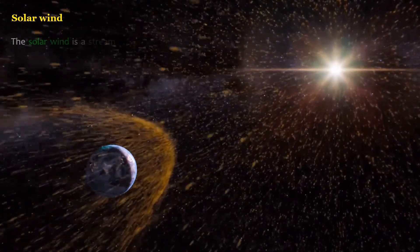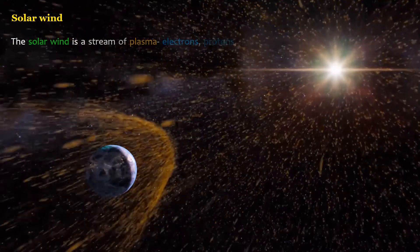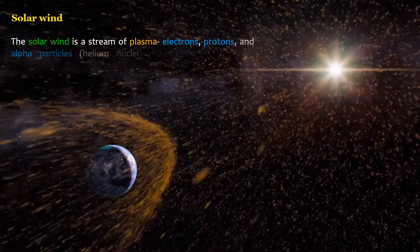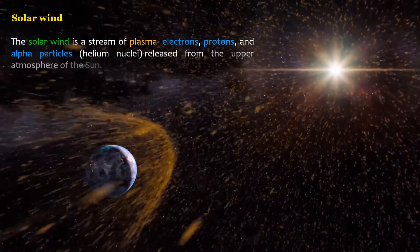The solar wind is a stream of plasma, electrons, protons, and alpha particles, helium nuclei, released from the upper atmosphere of the sun.